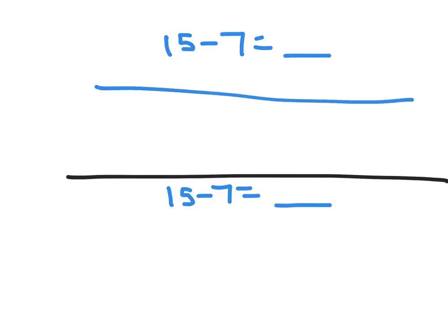Create the open number line. Start with 15. Jump back 7 spots: 1, 2, 3, 4, 5, 6, 7.